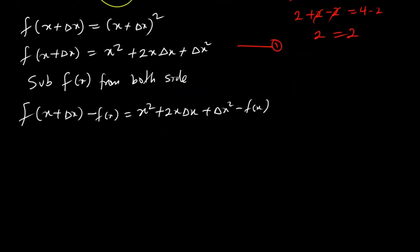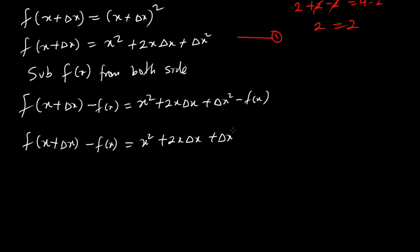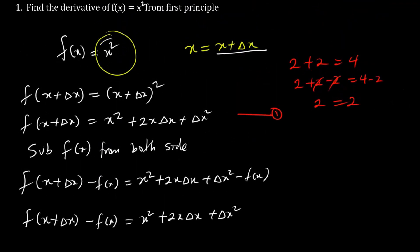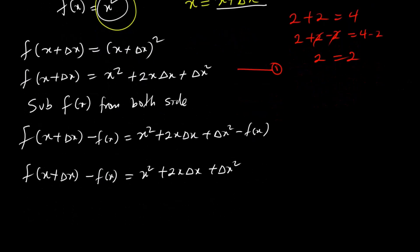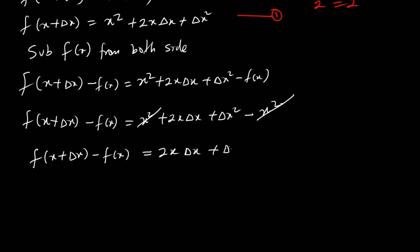Simplifying further, we have f(x + dx) − f(x) = x² + 2x·dx + dx² − f(x). Now instead of writing f(x), we replace it with its original value which is x². So x² cancels with x², and we have f(x + dx) − f(x) = 2x·dx + dx².